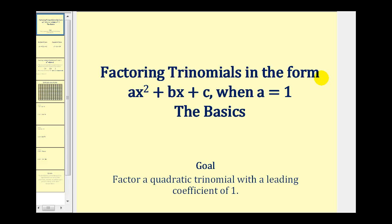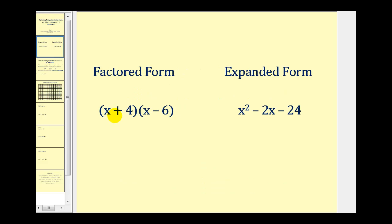Welcome to a video that will cover the basics on how to factor trinomials in the form of ax squared plus bx plus c when a is equal to 1, which means the first term will be x squared. We just finished learning how to multiply two binomials together, meaning we were given something in factored form and then we multiplied it out into expanded form. And now we're going to be doing the opposite — we're going to be given a trinomial in expanded form and asked to write it in factored form.